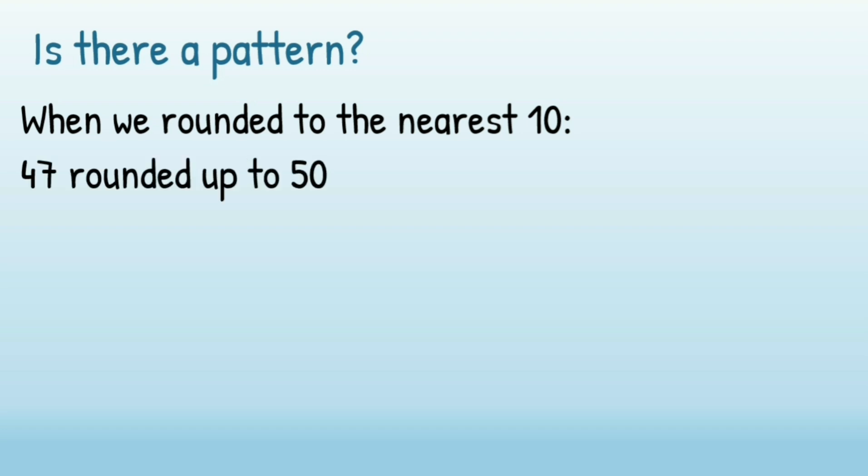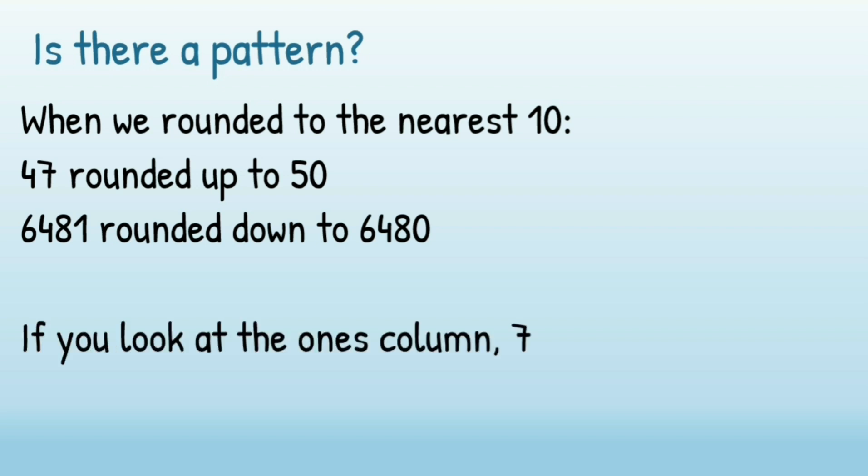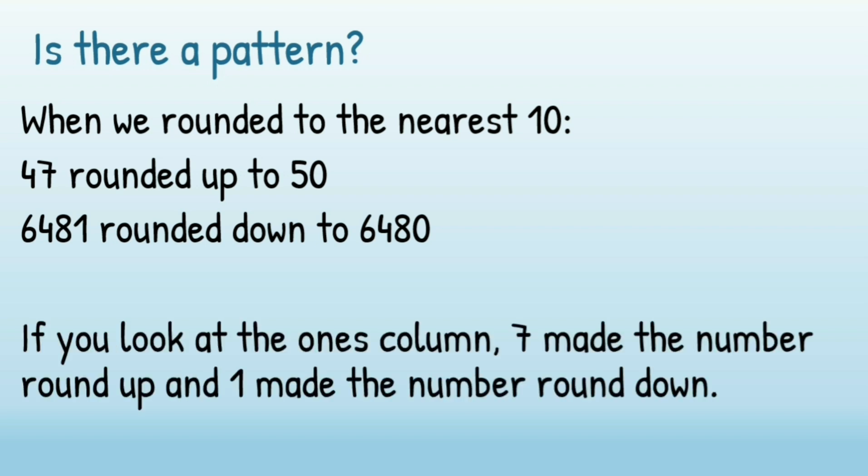So is there a pattern? When we rounded to the nearest 10, 47 rounded up to 50 and 6481 rounded down to 6480. If you look at the ones column in both of those numbers, 7 made the number round up and 1 made the number round down.